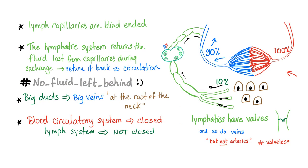Some quick bullet points: lymph capillaries are blind-ended. The lymphatic system returns the fluid lost from the capillaries during exchange back to the venous system. If here we have 100% of the blood, 90% will go back in the veins, and 10% goes through the lymphatics and then back to the veins, so that no fluid is left behind.